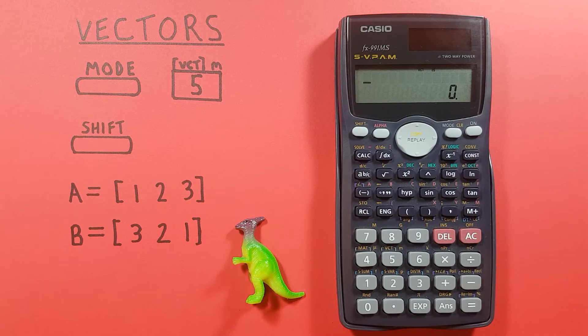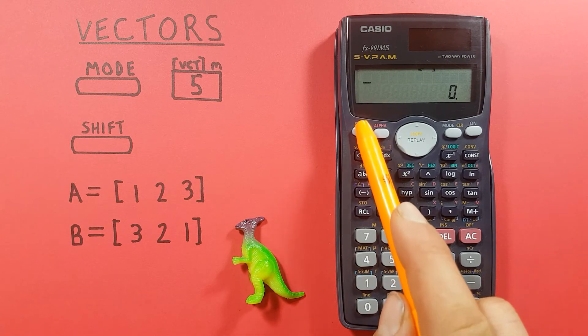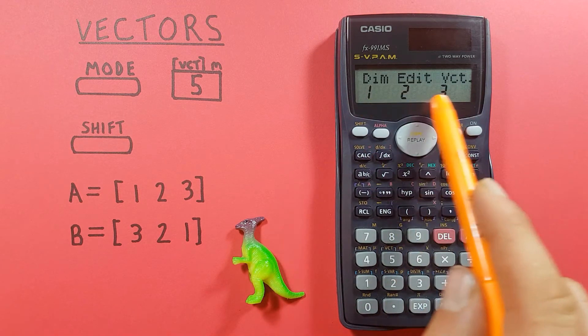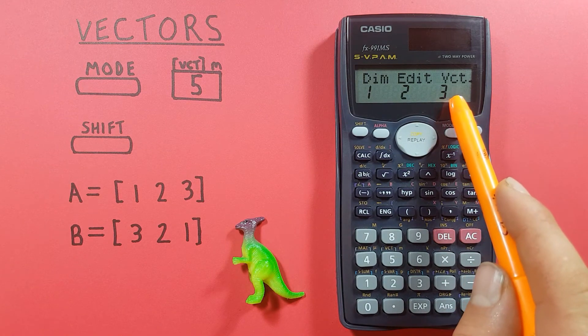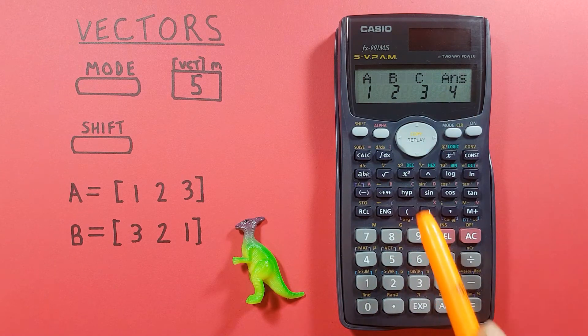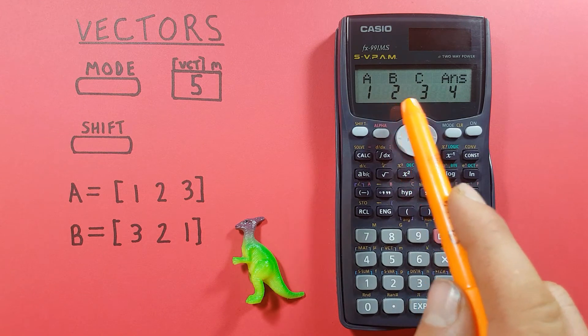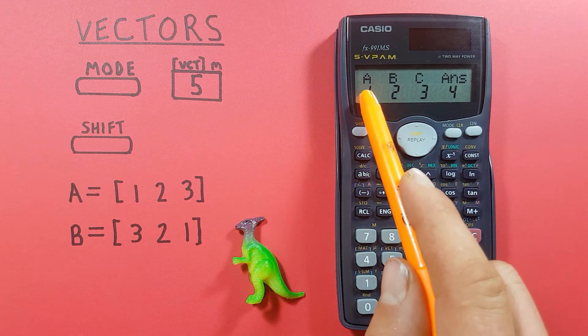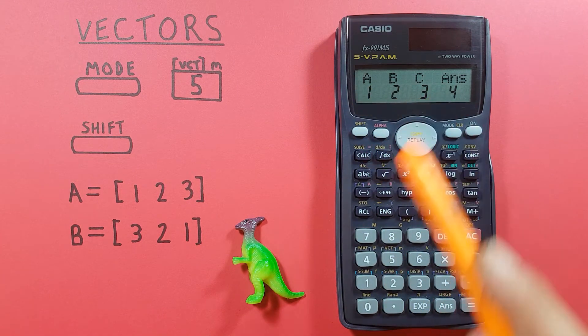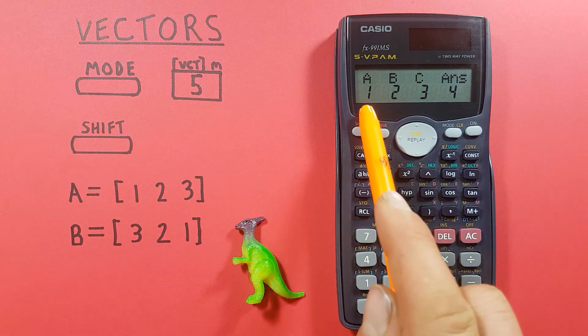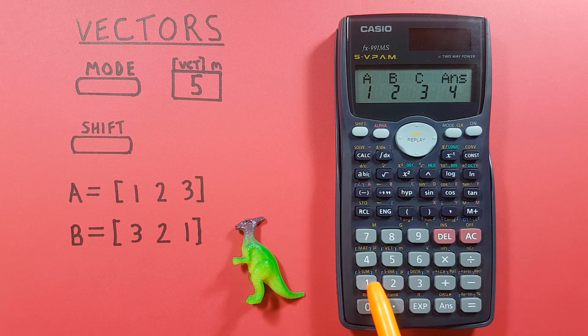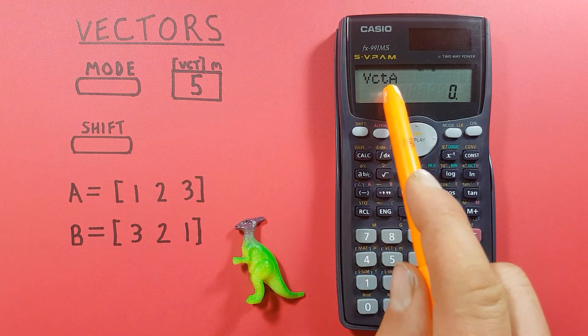Now if we want to do something as simple as adding these vectors we can do shift 5 to this menu here, and then choose 3 for vectors where it lists 1, 2, 3, or 4, so our first, second, or third vector. Well we're going to do A plus B so choose A and you see vector A appears on the screen.